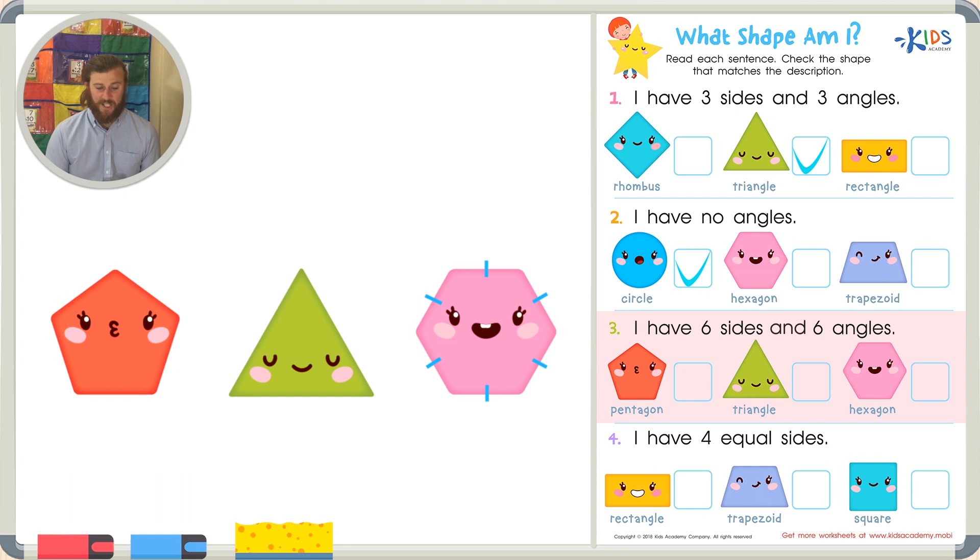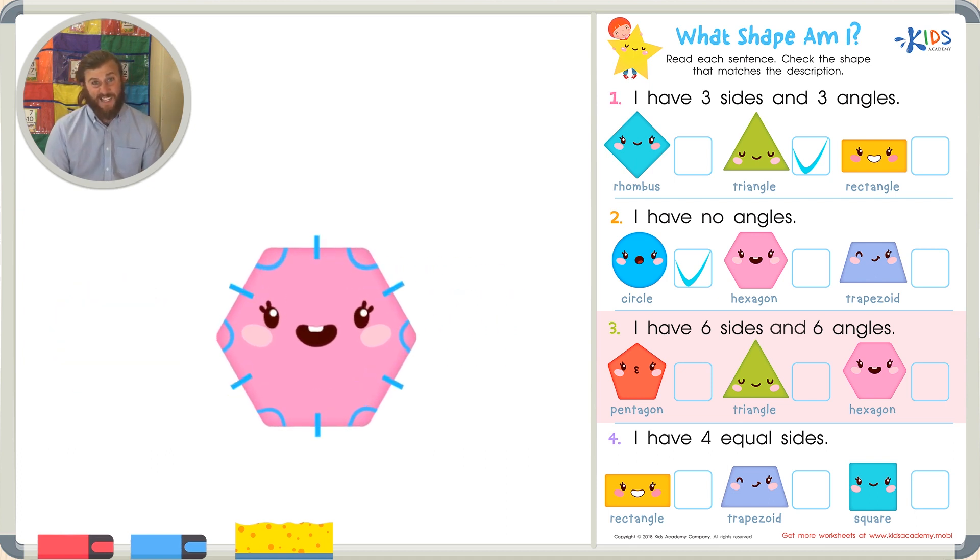Now let's just count the angles to be sure. There's one, two, three, four, five, and six angles on my hexagon. So this must be a hexagon because I know a pentagon, our first shape, has one, two, three, four, five sides, and our triangle only has three sides. So a hexagon is a shape with six sides and six angles. So let's go ahead and check the hexagon.